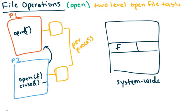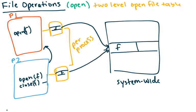Each per-process table has entries for its open files and points to the system-wide table. The system-wide table also keeps track of how many processes currently have that file open. So when process 2 calls close, it decrements the count in the system-wide table from two to one, removes the entry from its own per-process table, but the file remains in the system-wide table for process 1.